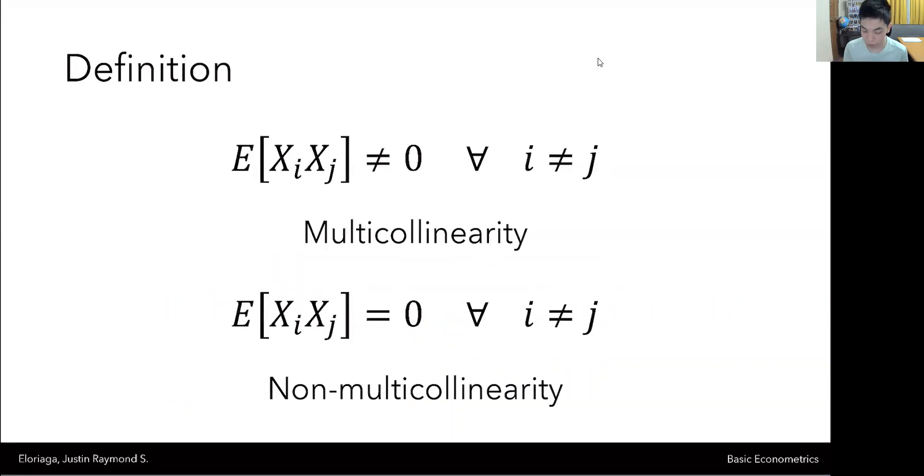Now, our assumption, remember, was this one, which is that this is our CLRM assumption. And what we said was we don't necessarily want an independent variable to have some correlation with another independent variable. And that's just because if it does have a relationship with other independent variables, as we will see in this video, there will be some consequences to that in terms of the properties of the estimators and the general robustness of the particular model.